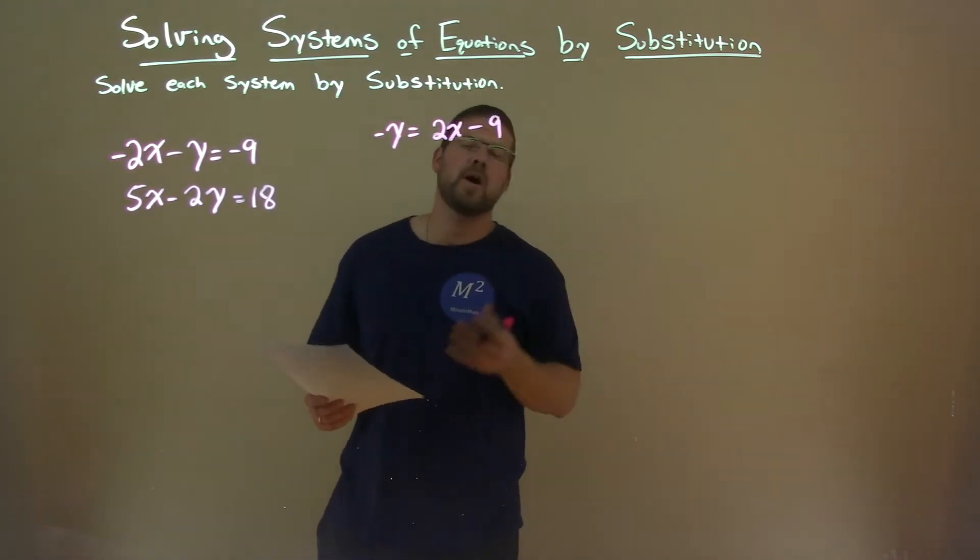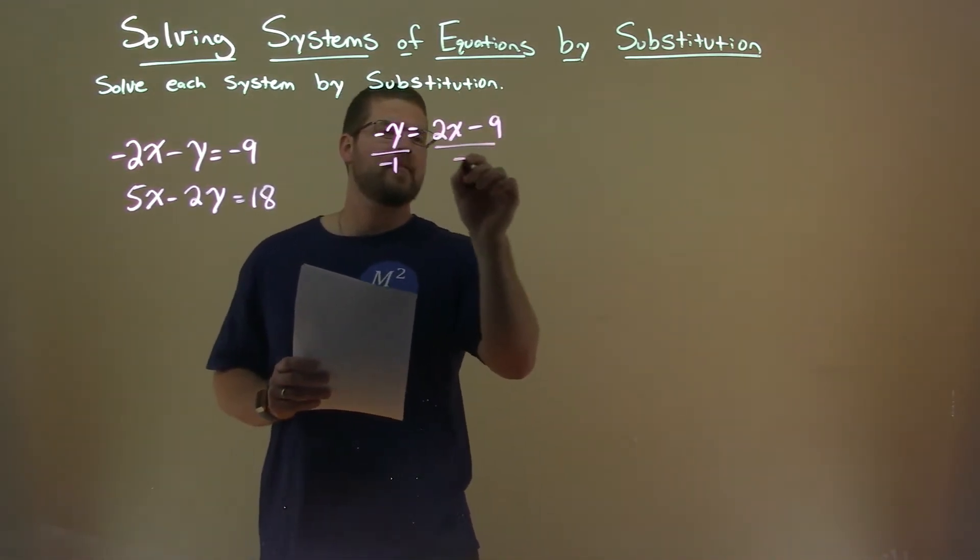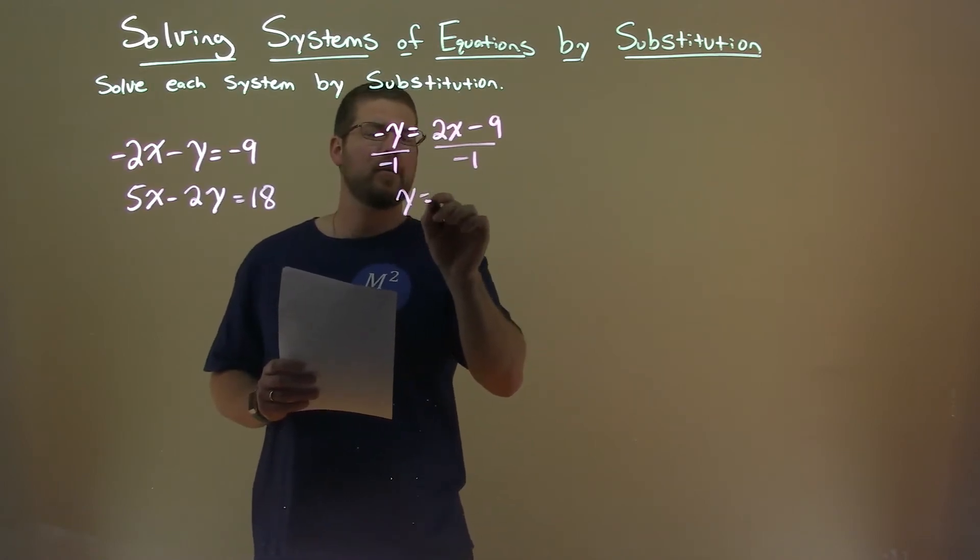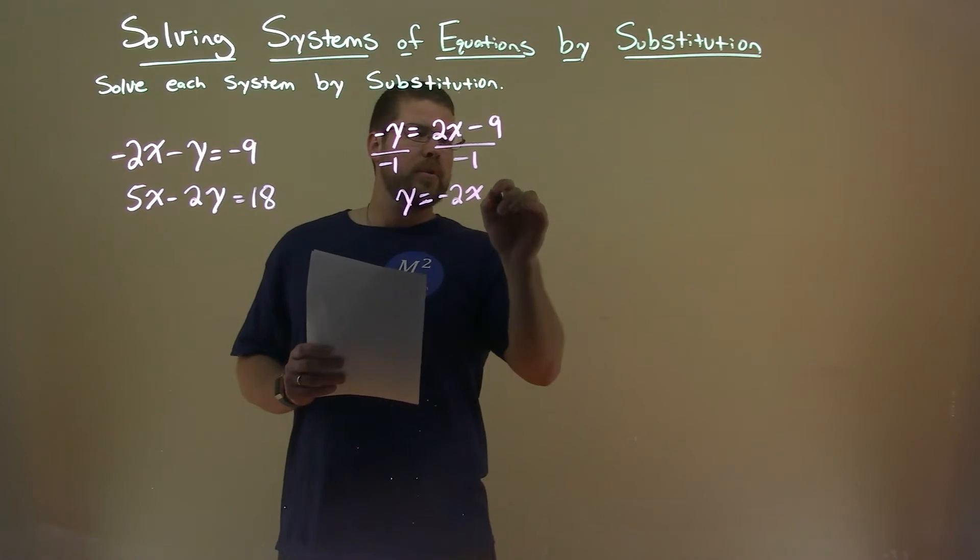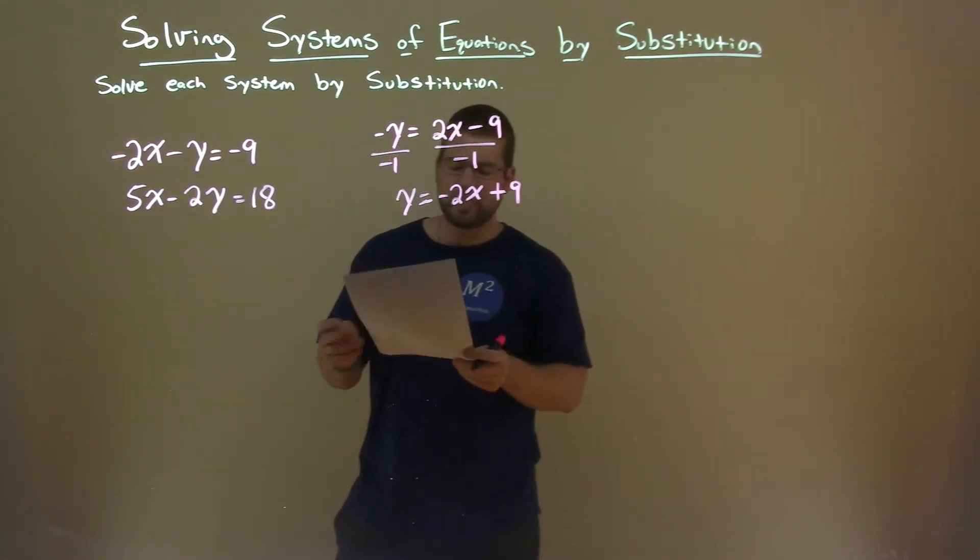But I just want y by itself. So I'm going to divide both sides by negative 1 and that gives me y equals negative 2x plus 9.